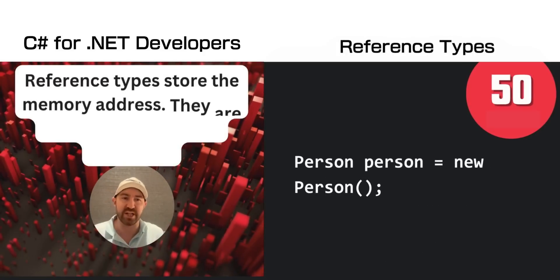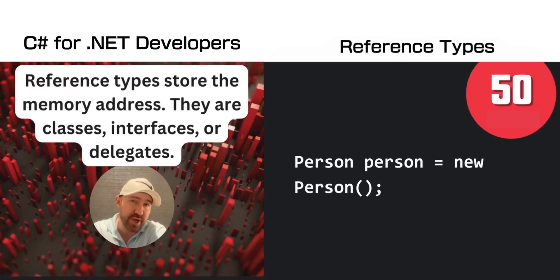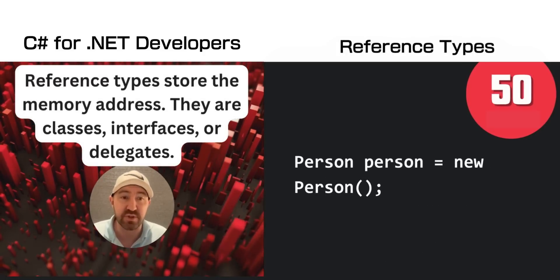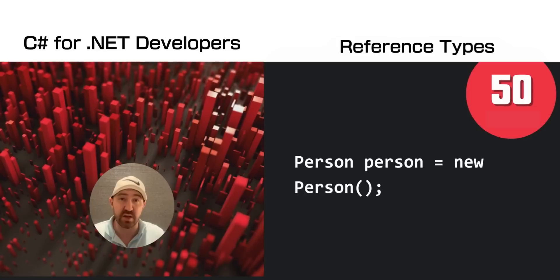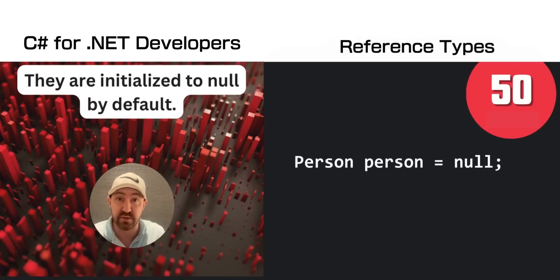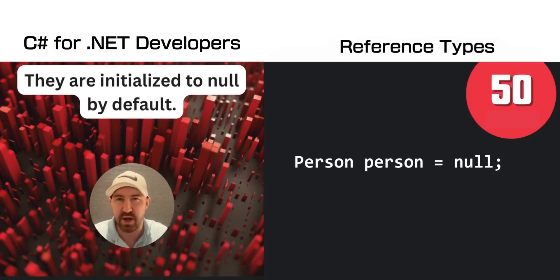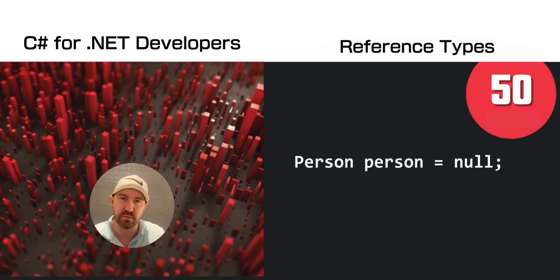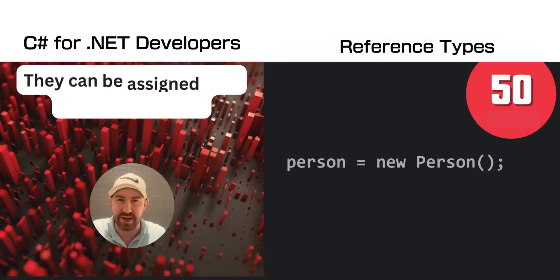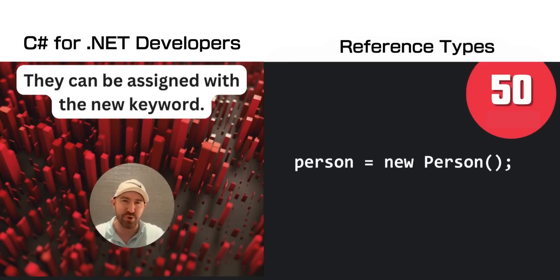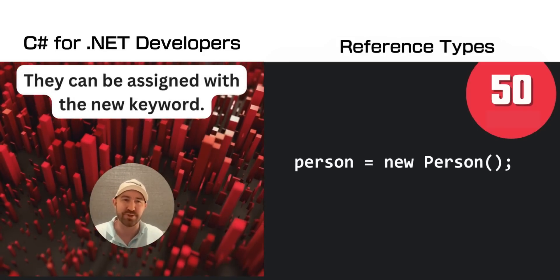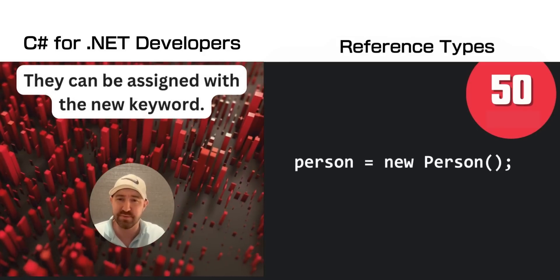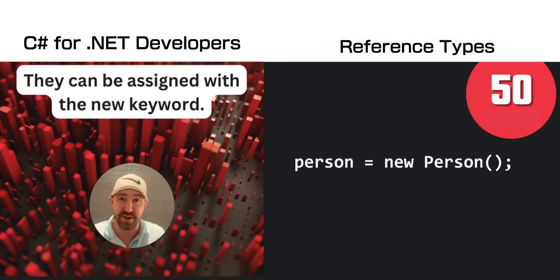Reference types actually store the memory address pointing to the value that is referenced. They're normally classes, interfaces, or delegates, and are normally initialised to null by default. You create a new instance of one with the new keyword — don't forget that one.